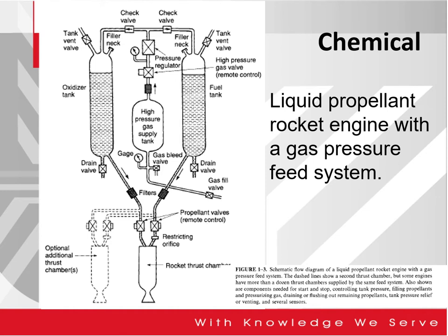The first one is a chemical type rocket propellant. This is a typical schematic flow of a liquid propellant rocket with gas pressure feed system. As we can see here, there is a typical optional additional thrust chamber if needed. This particular figure shows the simplified operation.